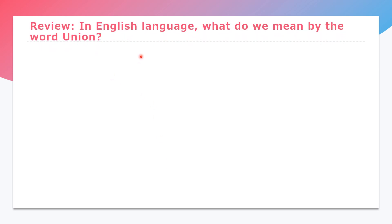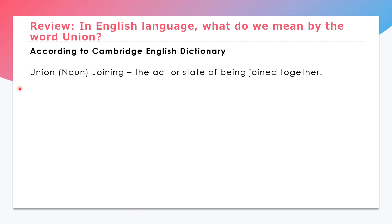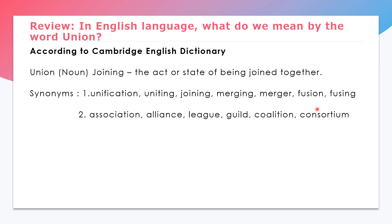Let us review. In English language, what do we mean by the word union? According to Cambridge English Dictionary, union is a noun which means joining, or the act or state of being joined together. Synonyms are unification, uniting, joining, merging, merger, fusion, fusing, or association, alliance, league, guild, coalition, or consortium.